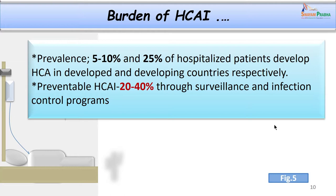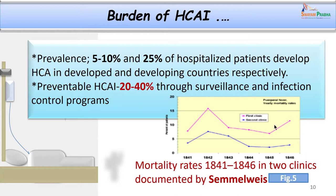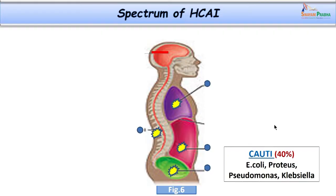What is the burden of healthcare associated infections? All over the world, developing countries have a higher burden — as high as up to 25 percent. However, the prevalence in developed countries is much lower, between 5 to 10 percent. Importantly, most of these infections are preventable; 20 to 40 percent of such infections can be prevented. There has been a long time dialogue on associated mortality and morbidity in healthcare associated infections, with high mortality reported since the time of Semmelweis.